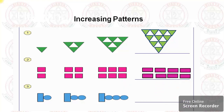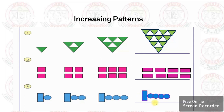Next, let's see — there is a rectangle and circles. The rectangle stays the same, but the circles are increasing: here one circle, here two, here three. So what will be next? One rectangle and four circles will come.